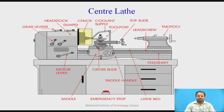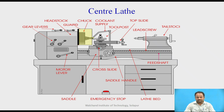To cut the metal, we require a tool. That tool is fitted on the tool post, which is fitted on the swiveling compound rest. That swiveling compound rest is fitted on the carriage. The carriage is covered by the apron, and whatever mechanism is placed inside is called the apron mechanism. Now we will see the mechanisms of lathe machine one by one.